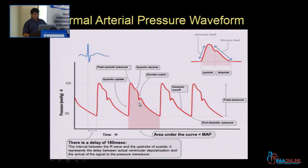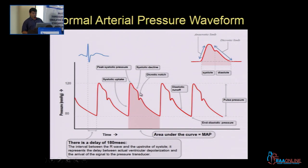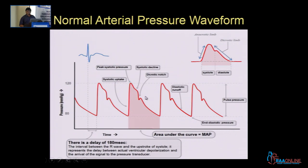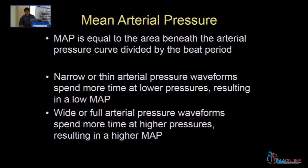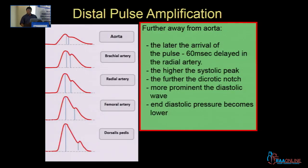In all arterial pressure waveforms, if you measure the dicrotic notch at the aorta it will be called an incisura and won't be very prominent. But as you measure pressure at the peripheries, the dicrotic notch becomes more and more prominent, and this is what is called distal pulse amplification.